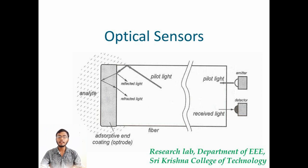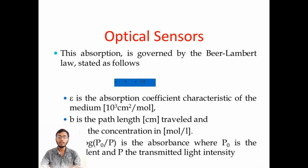The optical sensor operation can be explained by Beer-Lambert's law. According to Beer-Lambert's law, A is equal to epsilon r times b times m, where epsilon is the absorption coefficient of the medium, b is the path length, and m is the concentration. A is also equal to log of p0 divided by p, where p0 is the incident light ray and p is the transmitted light. According to the intensity of reflected and refracted lights, the chemical compound present is identifiable.